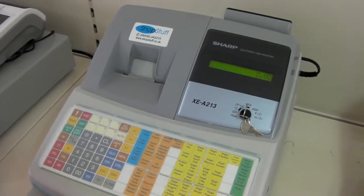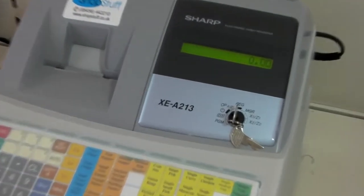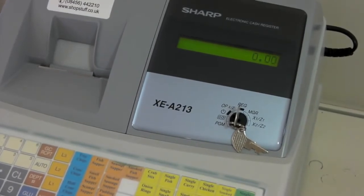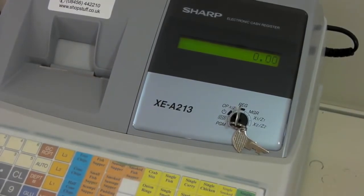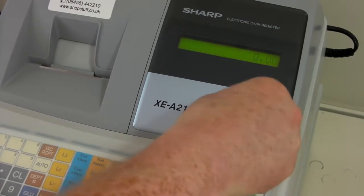To change your product price or description on the Sharp XEA213 cash register, simply put the manager key into the key lock, then turn around to the PGM position.